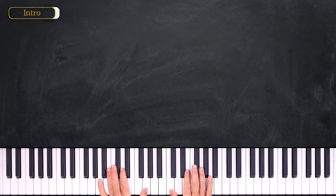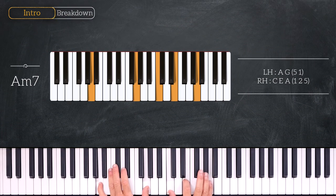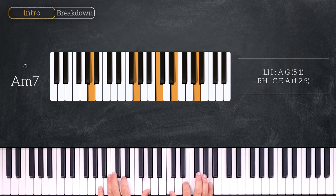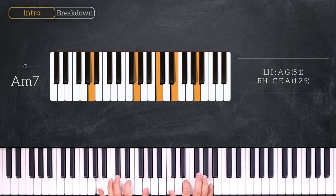We start by playing Am7. We have A, G on the left and C, E, A on the right. And here we are on the third degree.